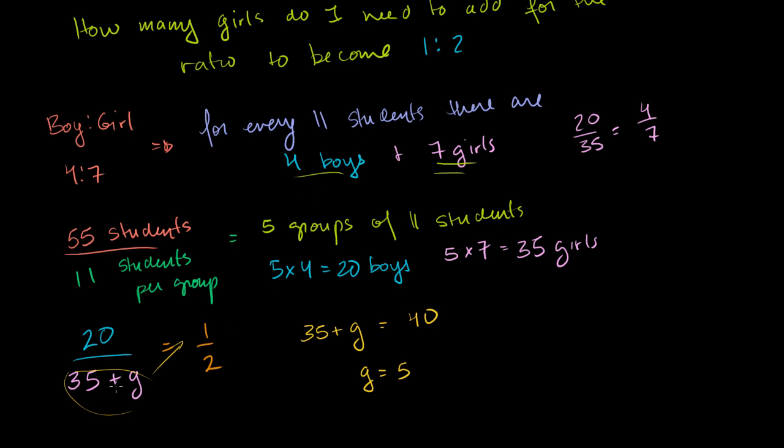So if you add 5 girls to your classroom, you're going to have 40 girls. So then you would have 40 girls and 20 boys. And your ratio is 20 to 40, which is 2 to 4, which is the same thing as 1 to 2. And we've done our problem.